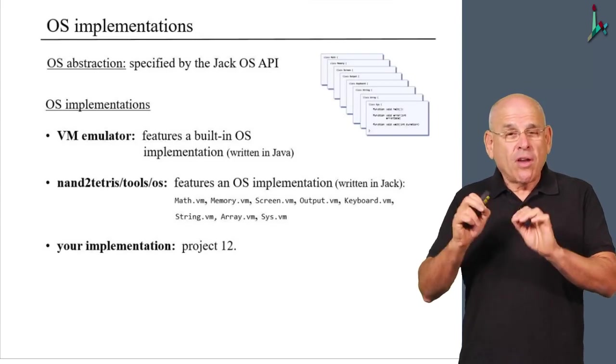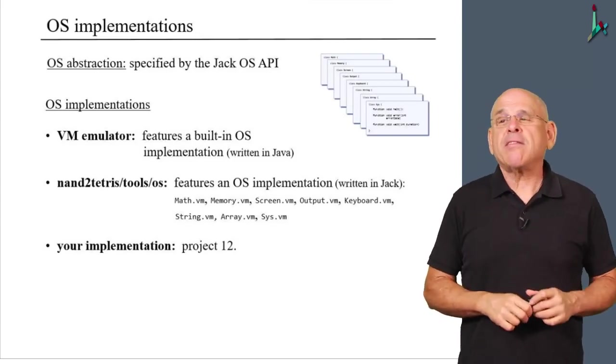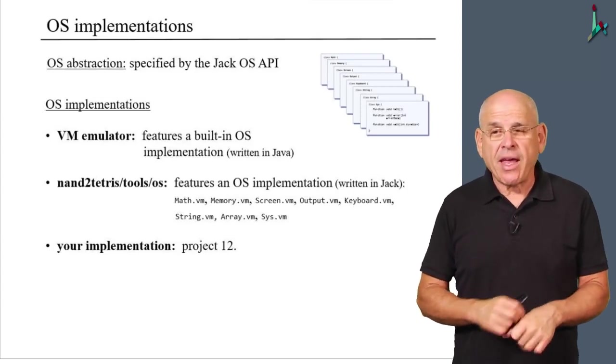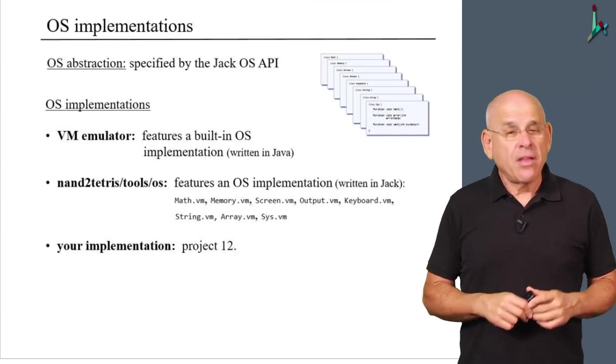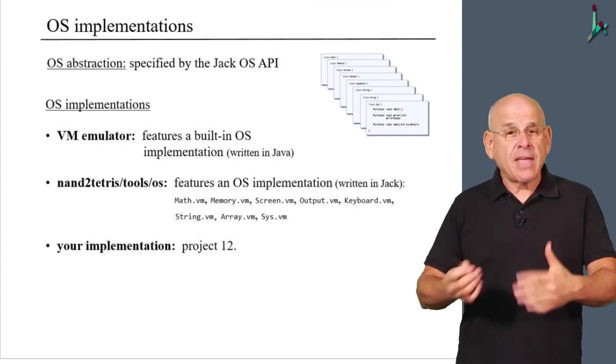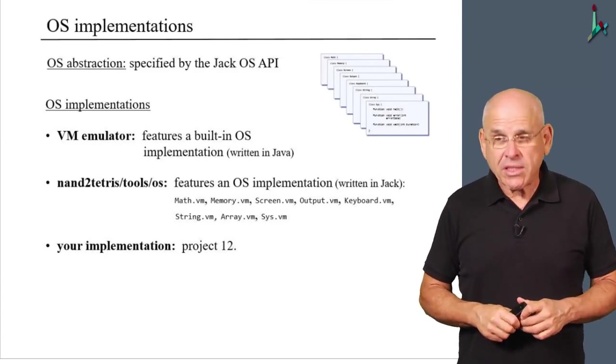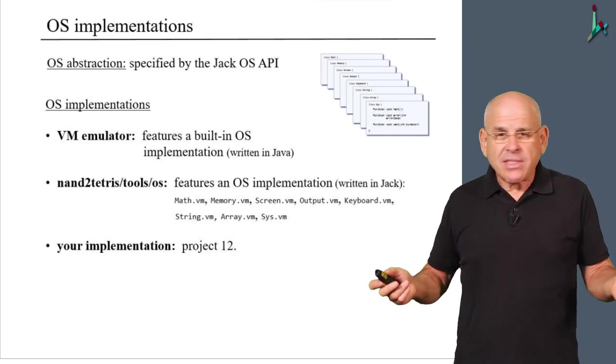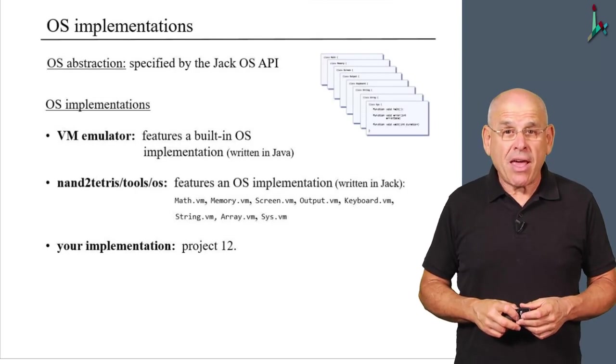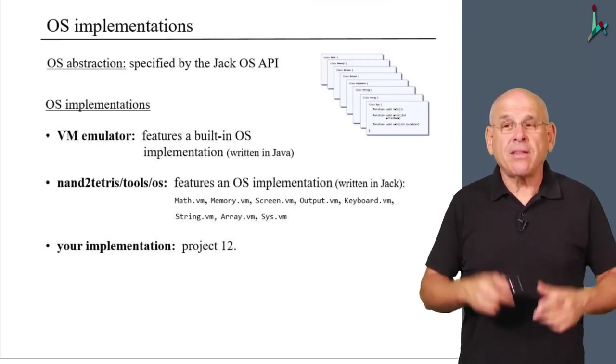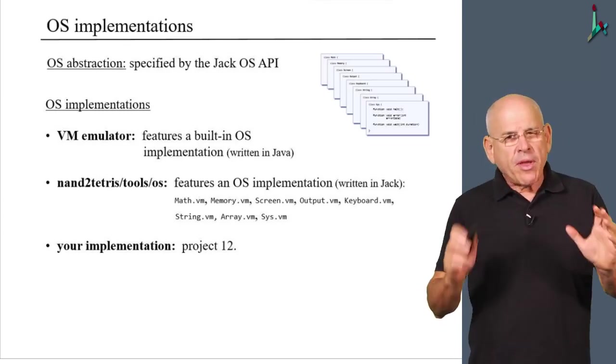And in project 12, you're going to do exactly the same thing. You're going to write these eight OS classes in Jack yourself. And after you compile them, you will get your own set of eight VM files, which presumably will deliver the same functionality as our VM OS classes. They will not necessarily be the same code, but hopefully, they will have the same behavior because they implement the same, or they seek to implement the same API.